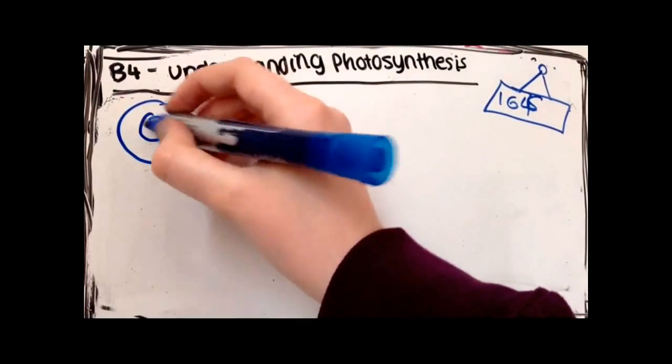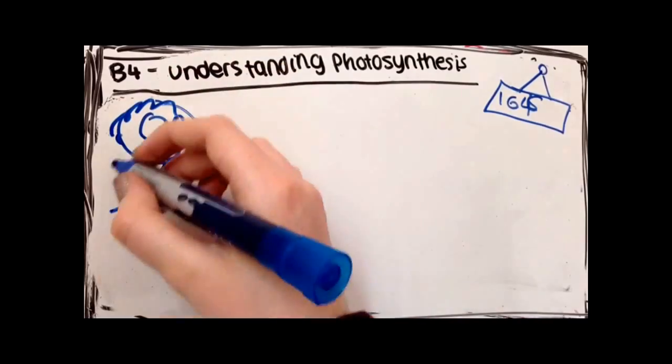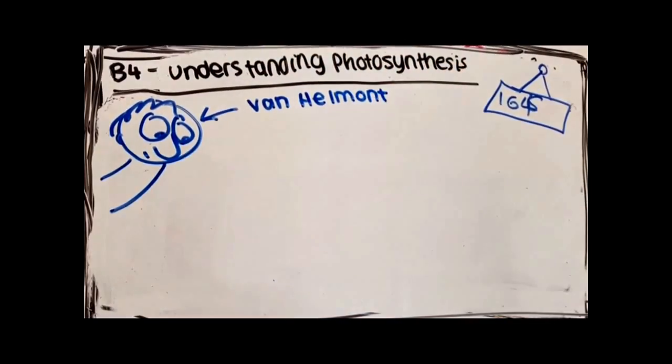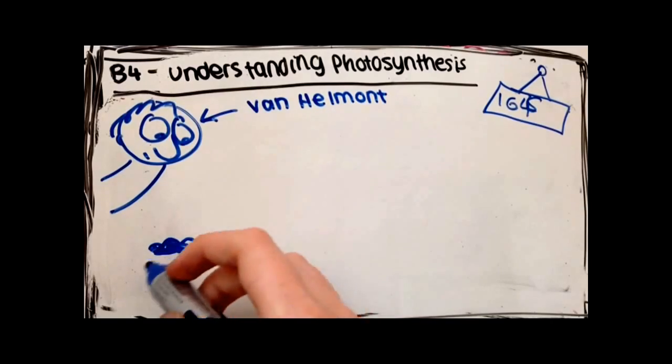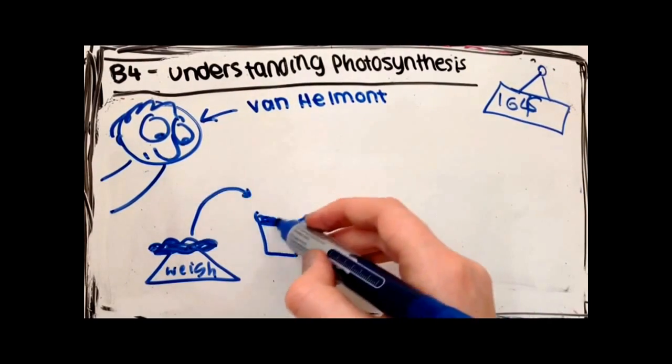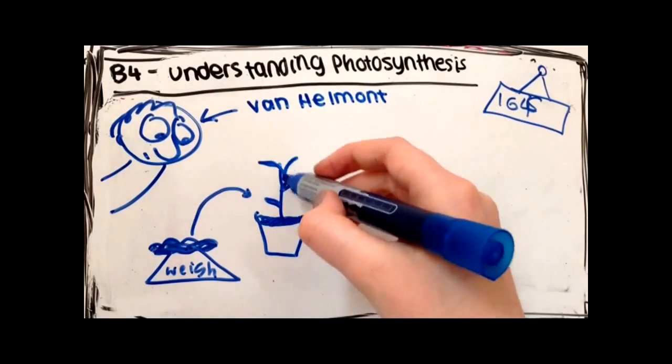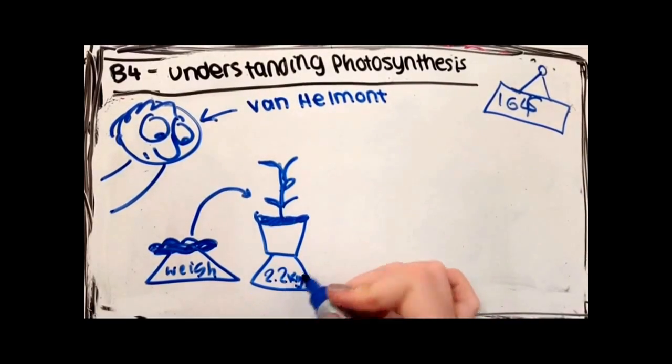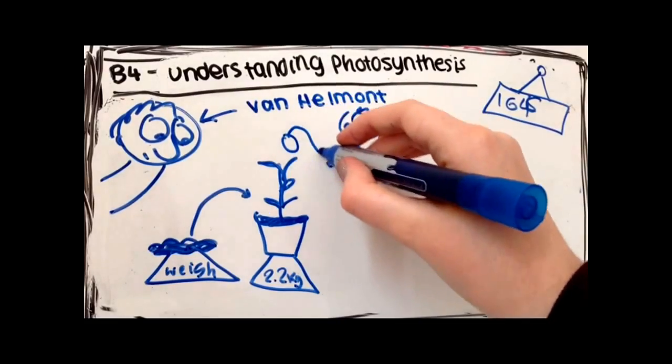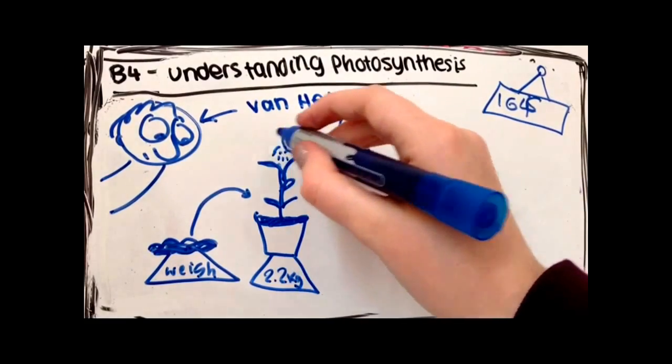Later, in 1648, a man named Jan van Helmont set up an experiment. For this, he dried some soil and weighed it and put it in a pot, in which he then planted a willow tree which at the time weighed 2.2 kg in the soil. He added rainwater to the pot whenever it was dry.